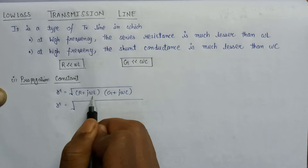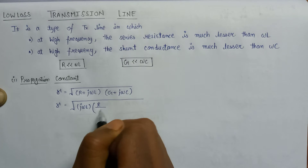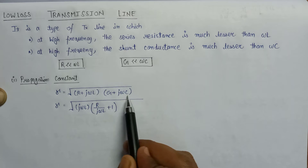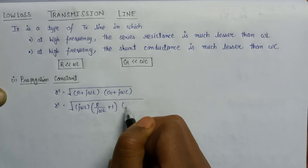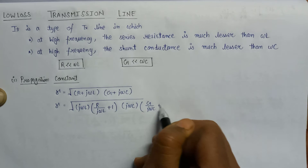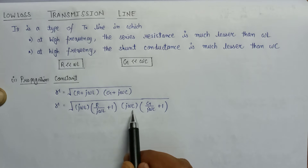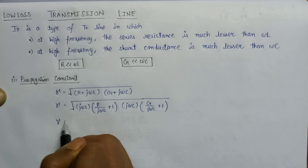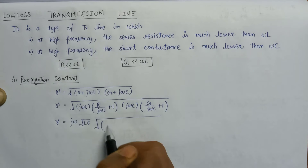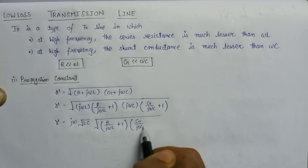First we take the jωL term common from the first bracket, so it becomes (R/jωL + 1). Then we take jωC common from the second bracket, so it becomes (G/jωC + 1). Taking jωL and jωC outside the square root gives us √(jωL · jωC) multiplied by √[(R/jωL + 1)(G/jωC + 1)].